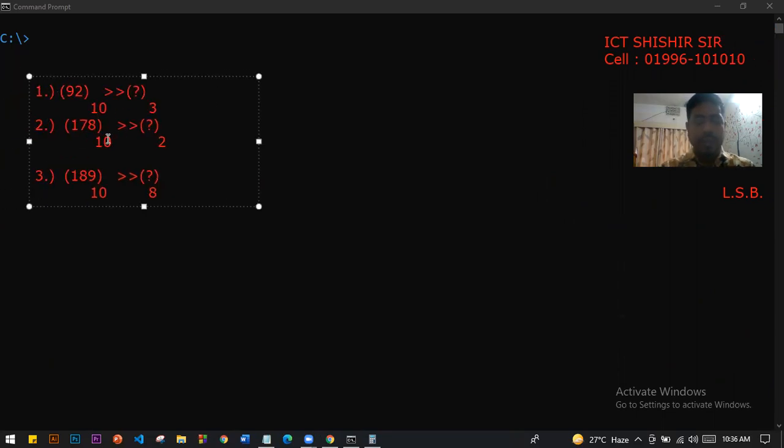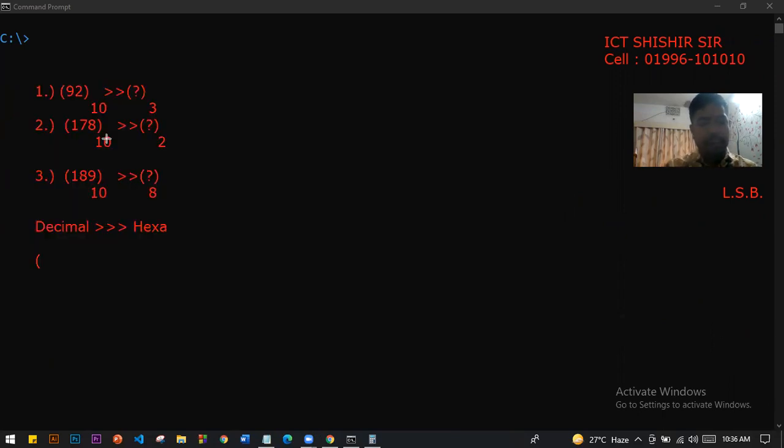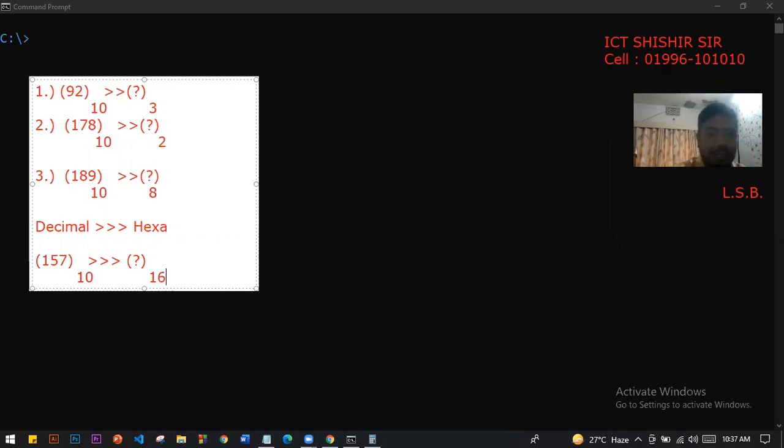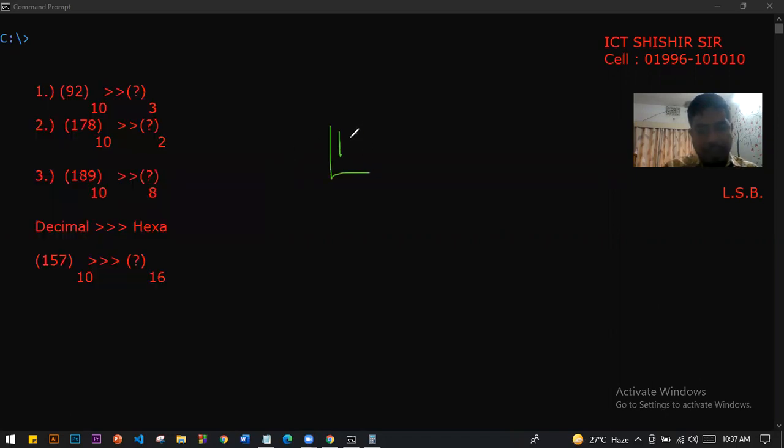Now decimal to hexadecimal. Decimal means base 10. For example, 157 base 10, and I'll have to convert it into hexadecimal number system. I'm ready to do this conversion.